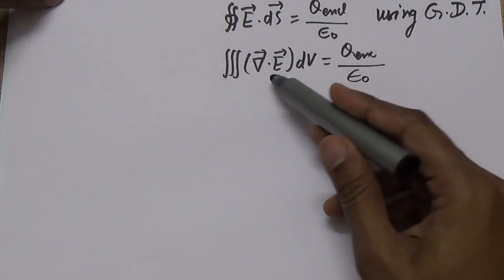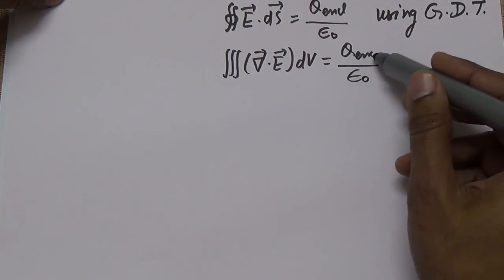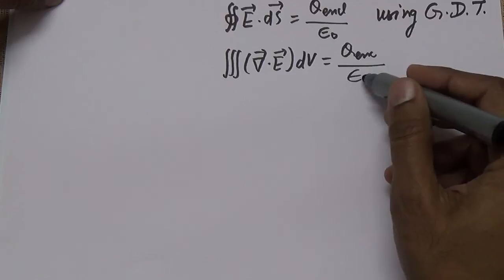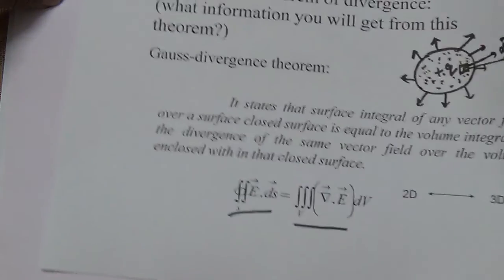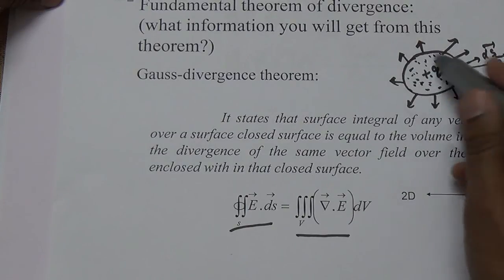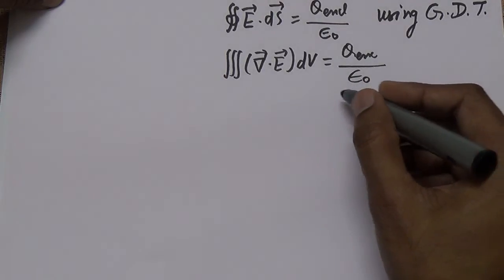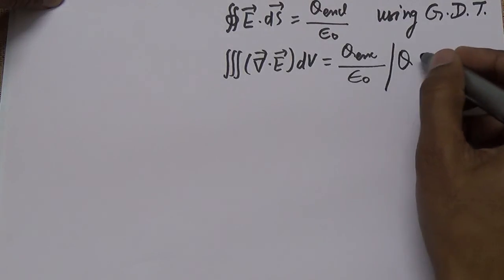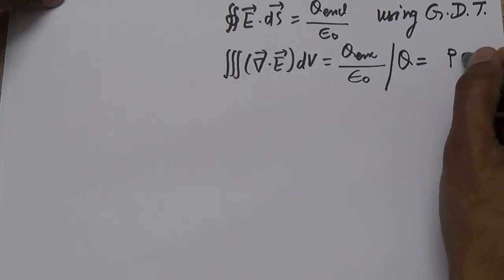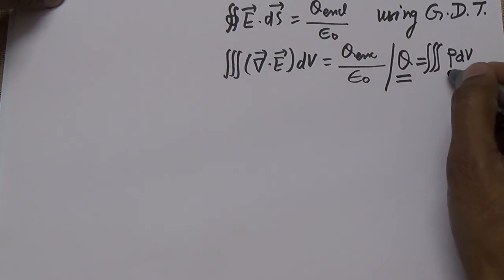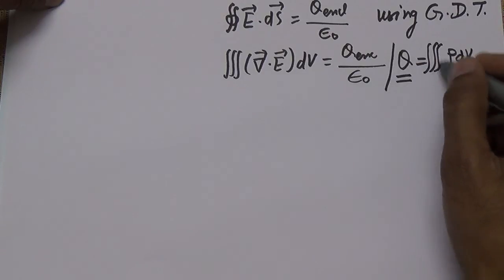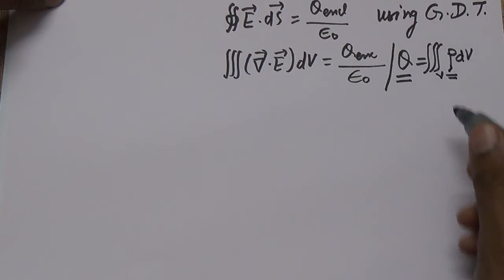The problem is that the left-hand side has been converted but the right-hand side is not comparable. Since 1/epsilon-naught is constant, we must convert Q in terms of the volume charge density rho times dV — because the sphere is solid and charge is uniformly distributed. So Q equals the volume integral of rho dV, where rho is the volume charge density.